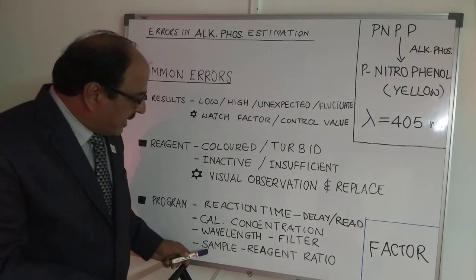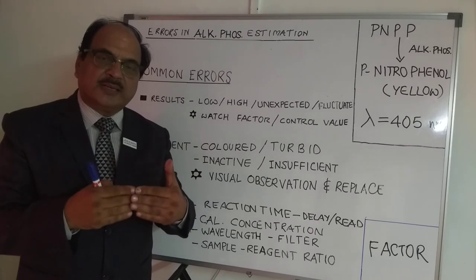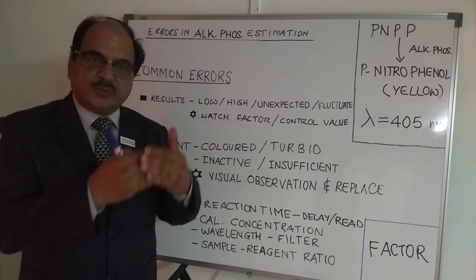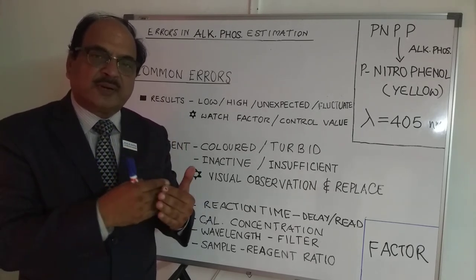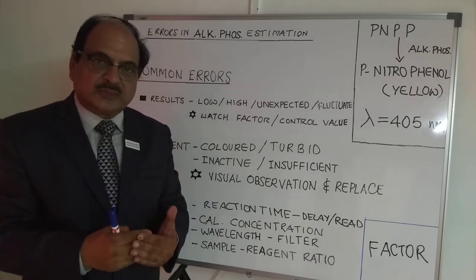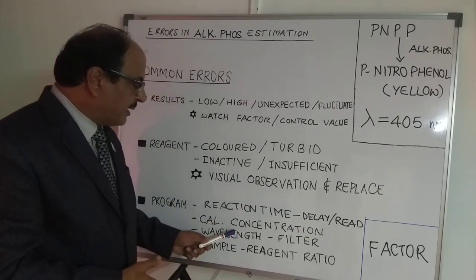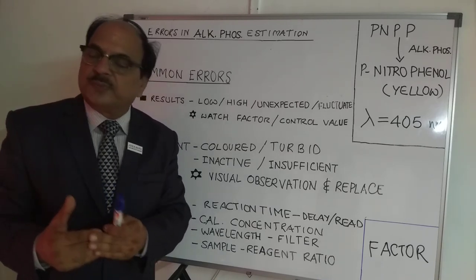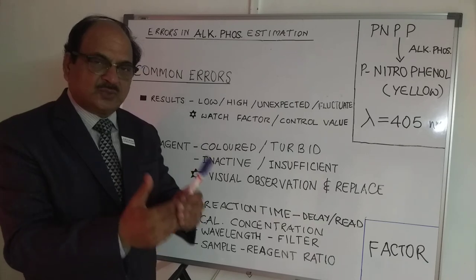Another important area is reagent-to-sample ratio. Alkaline phosphatase normally uses 1 ml of reagent with 20 microliters of sample volume. The maximum adjustment you can make is exactly half, maintaining the proportion — that is 500 microliters of reagent and 10 microliters of sample. If any ratio different from this is used, there is a possibility that calibration happened at one sample-to-reagent ratio while samples are run at a different ratio, which is bound to give you wrong results. Ensure that this ratio is followed.